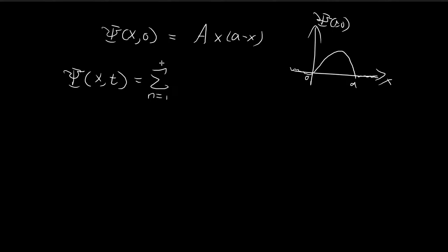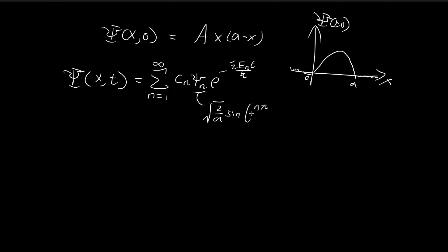We know that we can express the wave function in a form which we derived through separation of variables. Because the particle is inside the infinite square well, we know that xi_n is equal to sine of (n pi divided by a) times x. Now we would like to find what the coefficients c_n should be. This entire expression is the general solution, but we want to find the particular solution where this initial condition is satisfied.